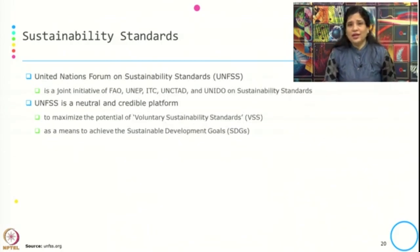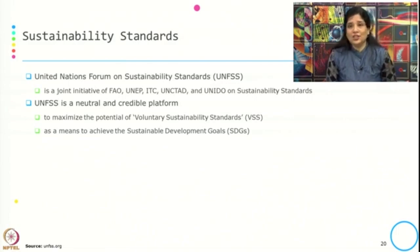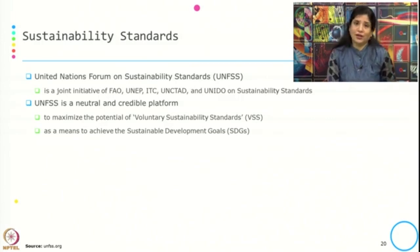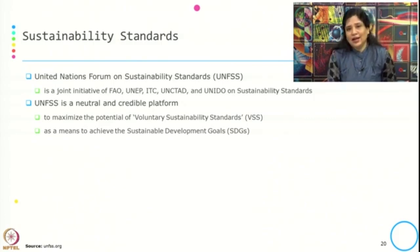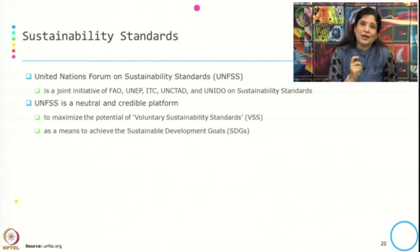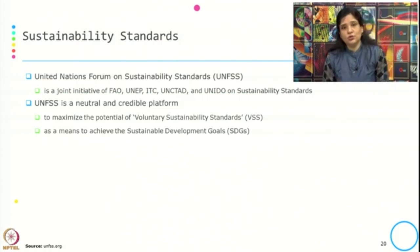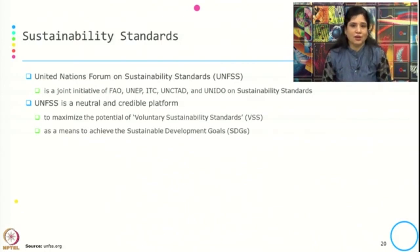There is a United Nations Forum on Sustainability Standards known as UNFSS, which is a joint initiative of FAO, UNEP, ITC, UNCTAD, and UNIDO on sustainable standards. This is a neutral and credible platform to maximize the potential of voluntary sustainability standards — VSS — as a means to achieve the sustainable development goals.